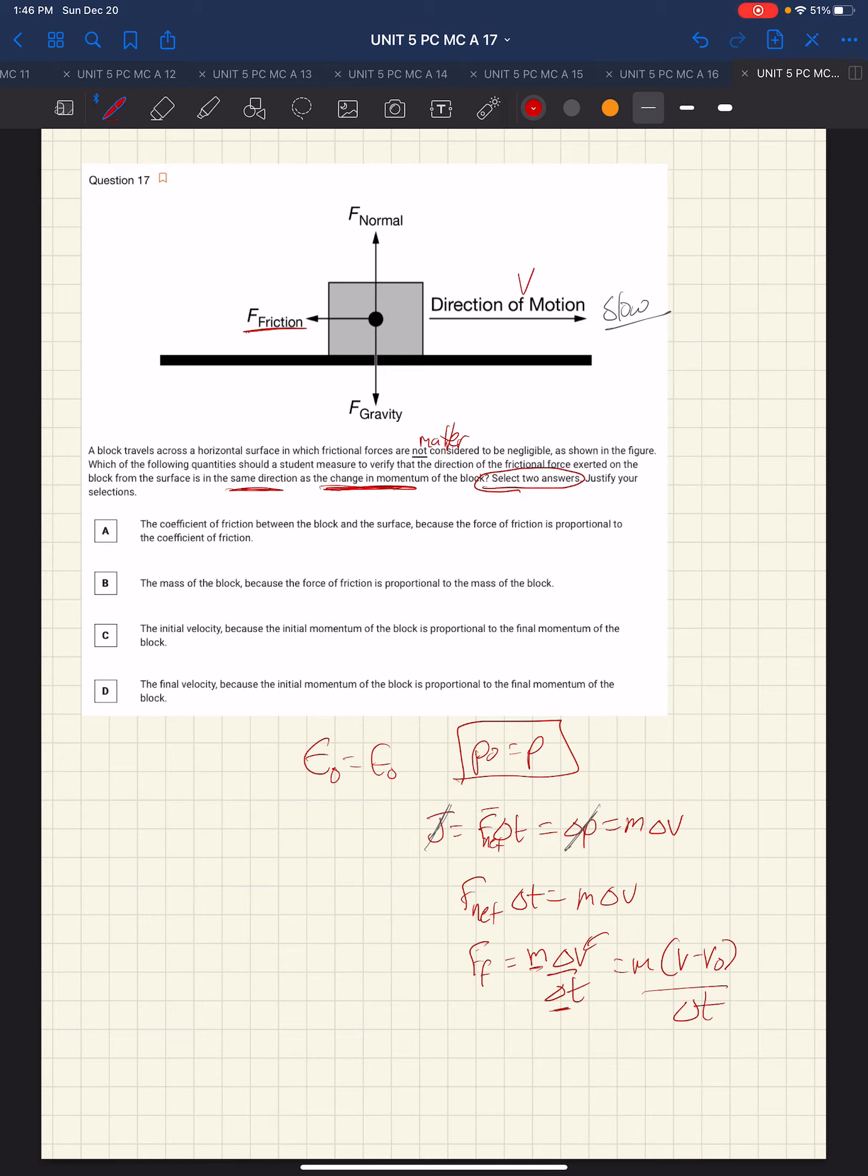Let's read these choices and see if there's something about the velocities. We've got coefficient of friction. That does not look like the choice, it's not mentioning velocity. The mass of the block. Well, mass of the block might be important, but that's not the only thing we need.